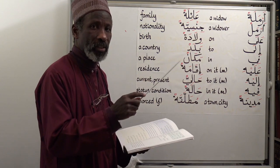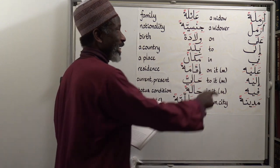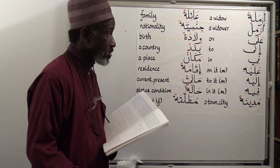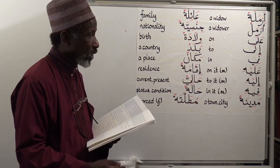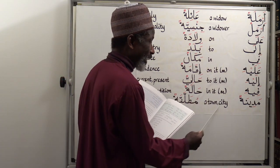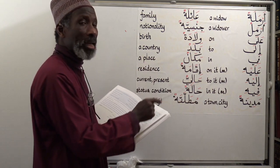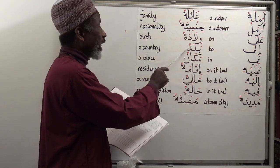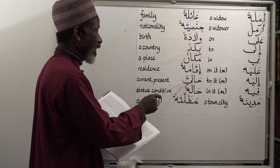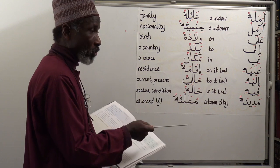Let's quickly go through more related vocabulary to idhafa construction, or the genitive of possession — reading practice as well. Armalatun — a widow; ala — on; ila — to; fi — in; alayhi — on it, referring to something masculine; ilayhi — to it, also referring to something masculine; fihi — in it, again masculine. Madinatun — a town or city; ailatun — family; jinsiyatun — nationality; wiladatun — birth; baladun — a country; makanun — a place; iqamatun — residence; haliyun — current or present; halatun — status or condition; mutalaqatun — divorced.